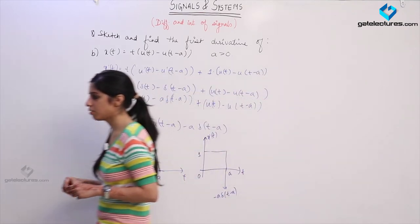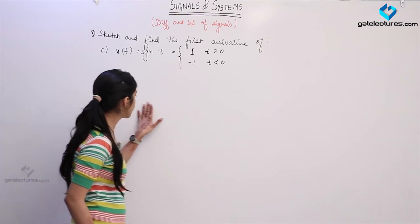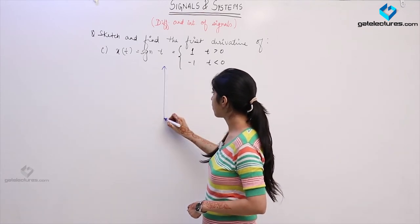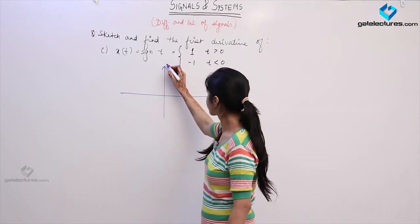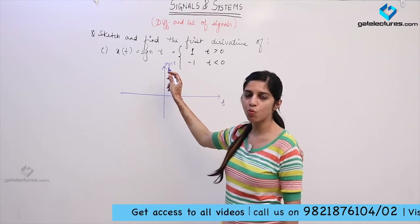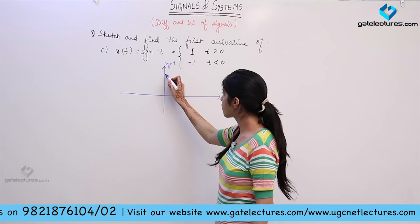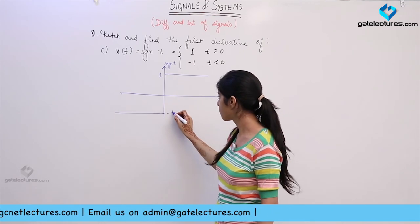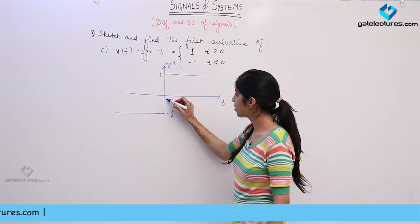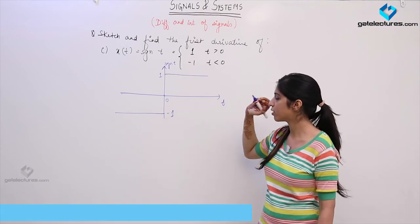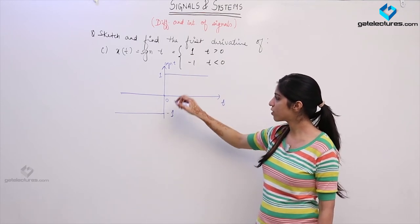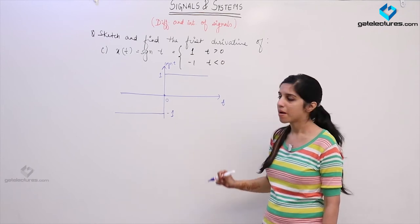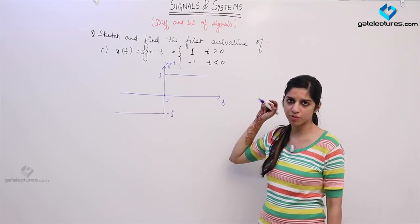We are going to look at one more part from this question. Now we are given a signal which is the signum function. The signum function has value 1 for all positive values of t, and minus 1 for all negative values of t. Its value at t equal to 0 is undefined, although if you take the average of the two values it would be 0. There are several ways to consider the value at t equal to 0.